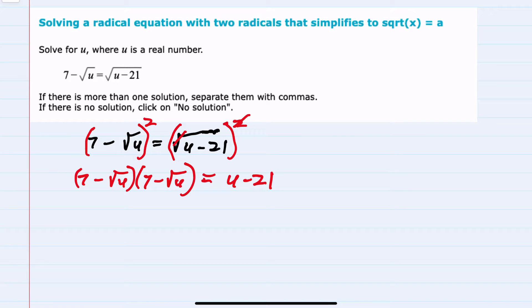Continuing here, multiplying on the left-hand side, the 7 times 7 would give us a 49. Multiplying outside, we would have minus 7 square roots of u. Multiplying inside would give us another minus 7 square roots of u. Combining those, we would have minus 14 square roots of u. And then the final distribution, negative square root of u times negative square root of u is positive square root of u squared, which is just u.